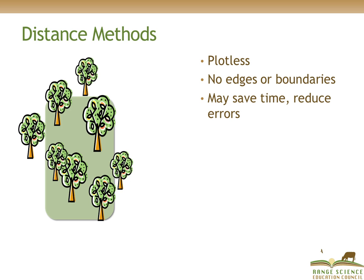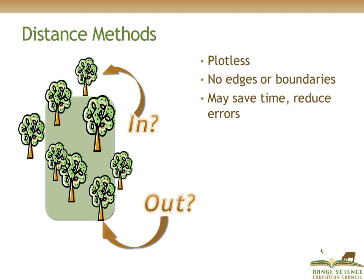Using a distance method can not only save time in certain situations, but also reduce the potential for errors that are made when we're making decisions at the boundaries of plots or quadrats. For example, when we're measuring plant density, we often have to make a decision about whether a plant is in or out when it occurs near the boundary of our plots. With distance methods, we don't have to worry about whether a plant is in or out.